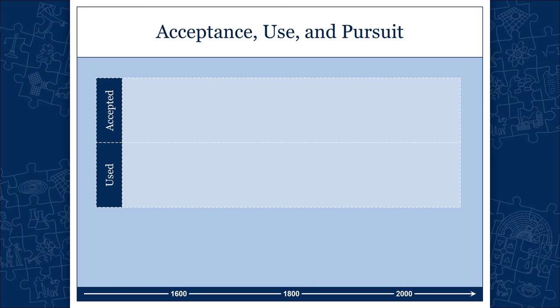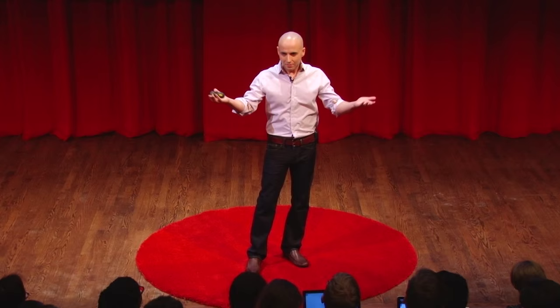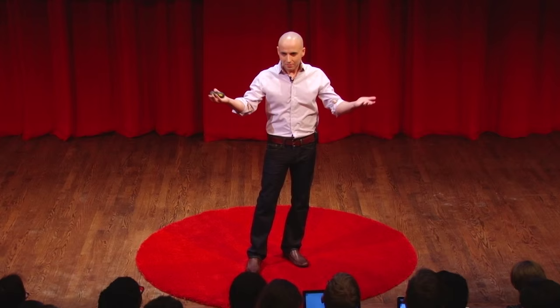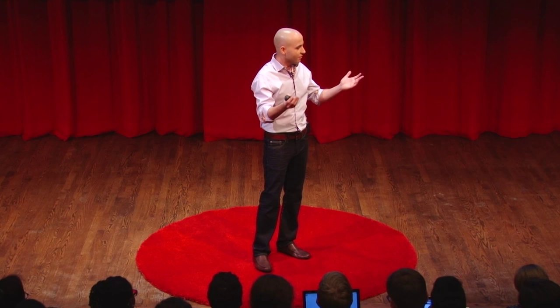Let me give you some examples. If I asked you which physical theories you think best describe the physical world, what would you say? You'd probably say general relativity and quantum physics. These two theories provide us with the best available description of physical processes.